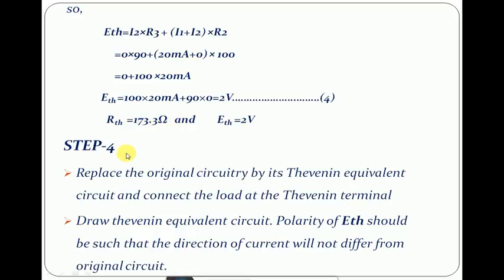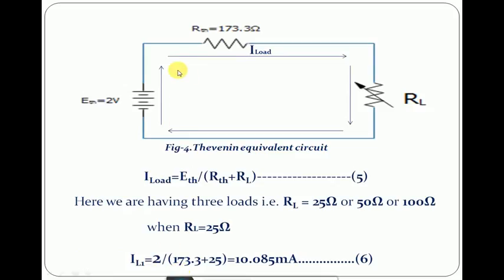So RTH and ETH have been calculated. Proceeding to step four: replace the original circuit by the Thevenin equivalent circuit and connect the load at its Thevenin terminal. Draw the Thevenin equivalent circuit, ensuring the polarity of ETH is such that the direction of current does not differ from the original circuit. In figure 4, the overall circuit is replaced by a single equivalent voltage source ETH = 2 V and a single resistance RTH = 173.3 Ω connected across the load terminal RL. The load current is given by I_load = ETH / (RTH + RL). We have three loads: RL1 = 25 Ω, RL2 = 50 Ω, and RL3 = 100 Ω.